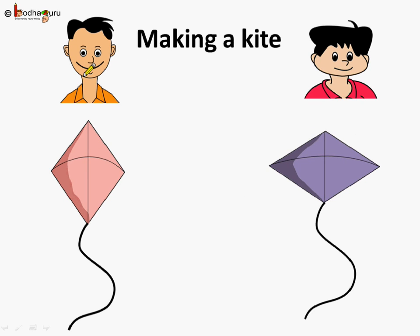This is Amman and this is Anand. One day Amman and Anand tried to make colorful kites. These are their kites — this is Amman's kite and this is Anand's kite. But Anand's kite is looking a little different and it wouldn't fly properly.